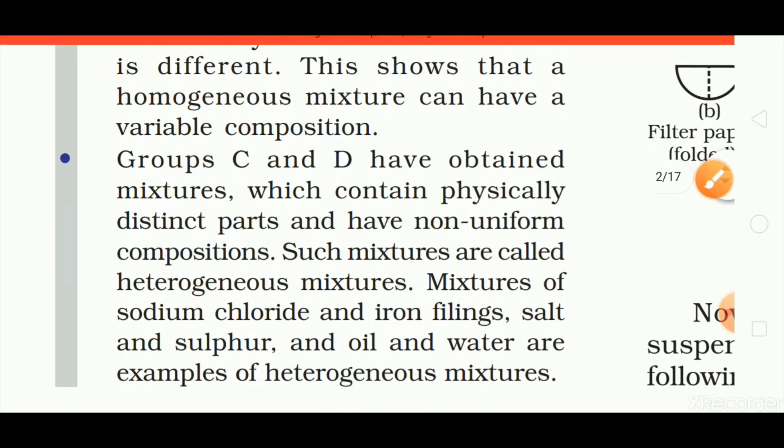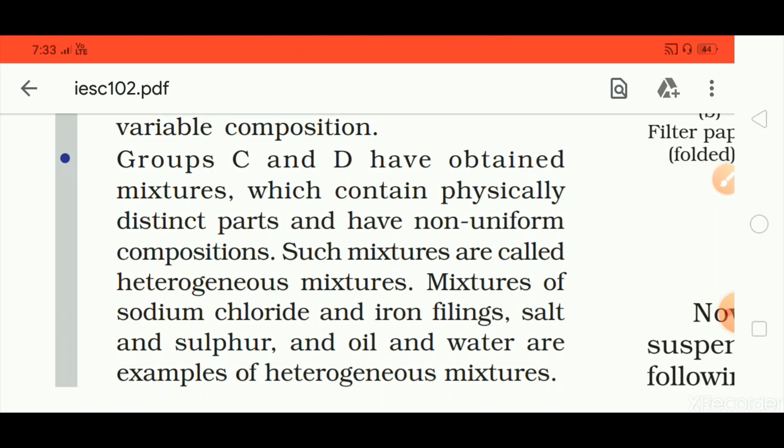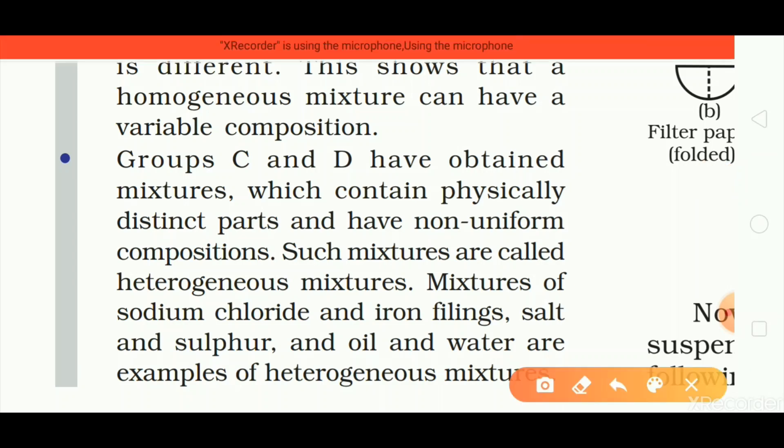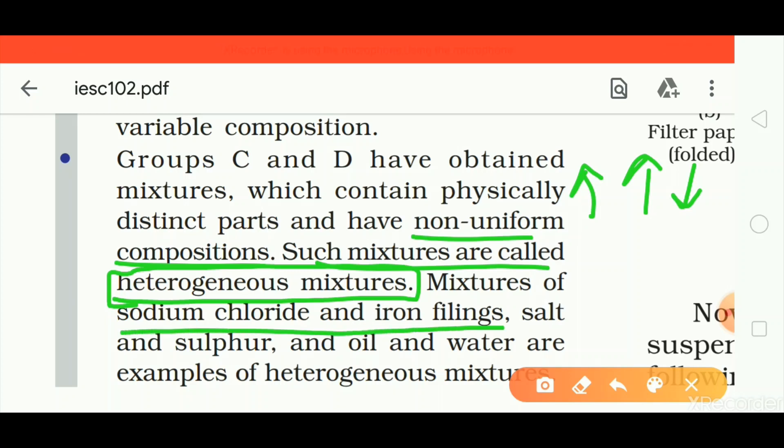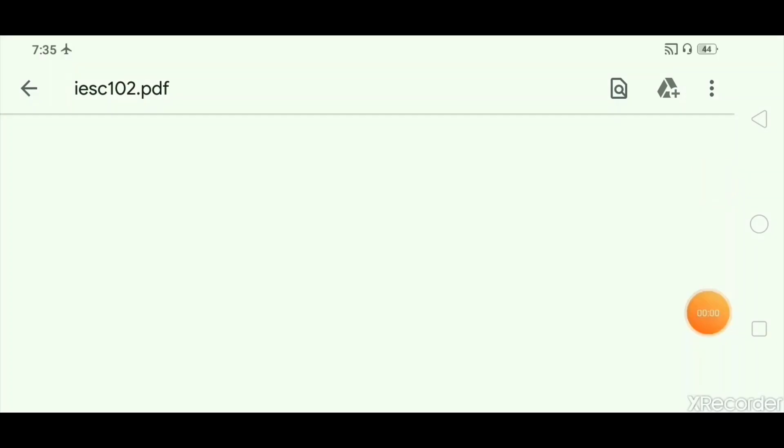Groups C and D have obtained mixtures which contain physically distinct parts and have non-uniform composition. Such mixtures are called heterogeneous mixtures. Examples include sodium chloride and iron filings, salt and sulphur, and oil and water.